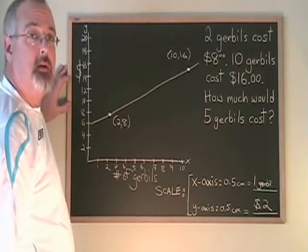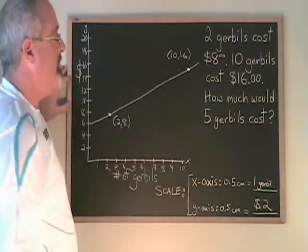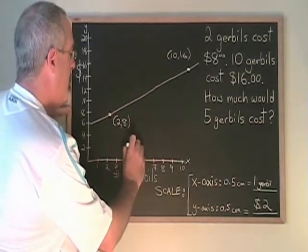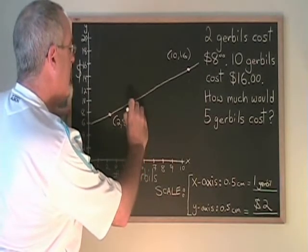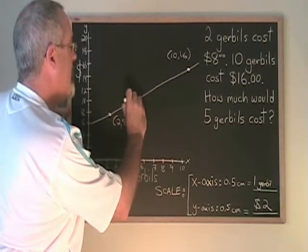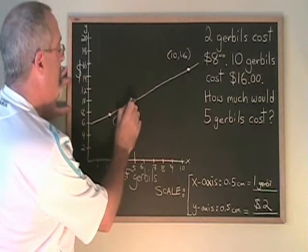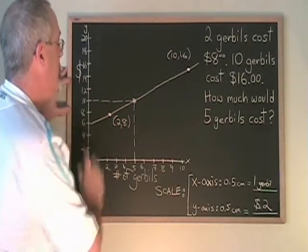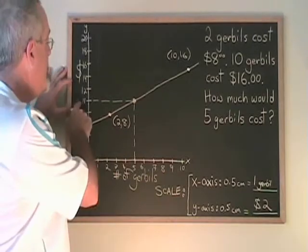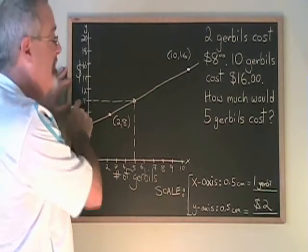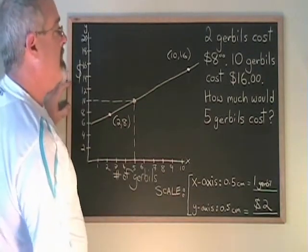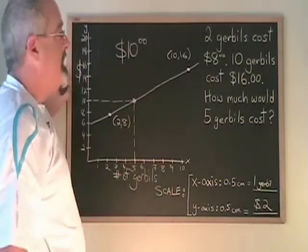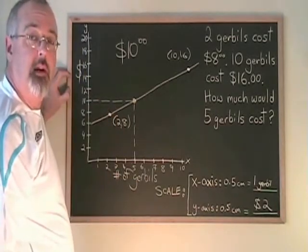It's time to answer our question. How much would 5 gerbils cost? We find 5 gerbils along the x-axis, draw a dotted line straight up until I hit my line, put a dot, and then from that dot, draw a dotted line straight across until I hit my other axis. That's the answer to my question. 10. So the answer to the question is that 5 gerbils should cost $10. Give the answer with the unit of measure and you're finished.